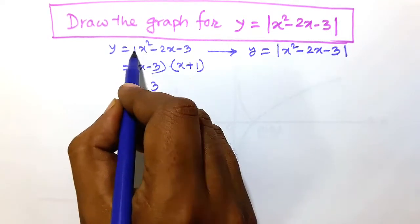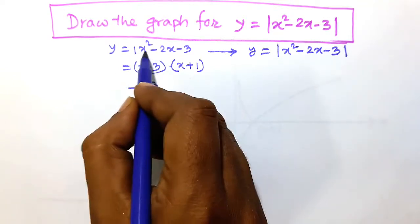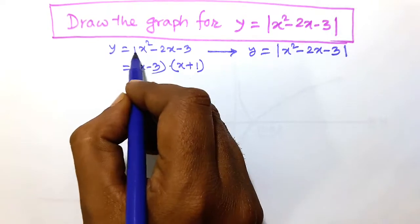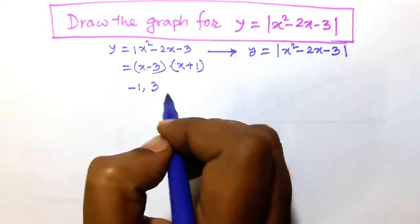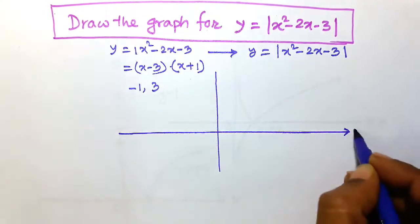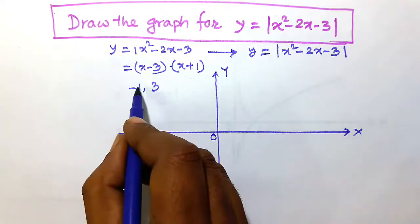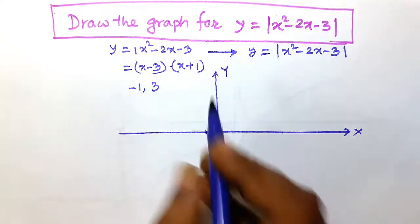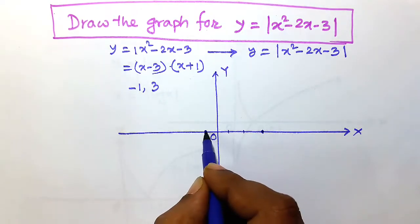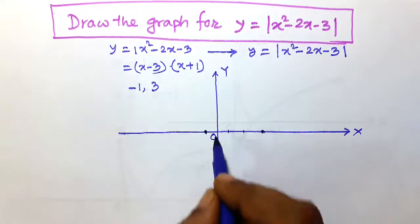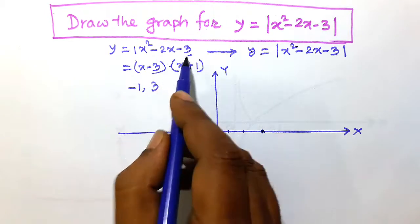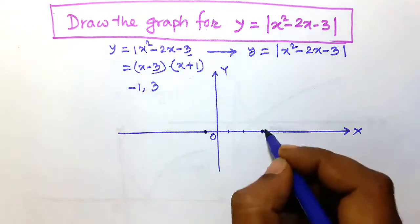The coefficient of x squared is one, which is positive. Since x squared minus 2x minus 3 is a parabola with a positive leading coefficient, its two arms will point in the upward direction. The curve passes through the critical points minus one comma zero and three comma zero, and the arms go upward like this.